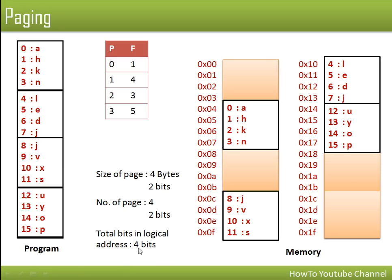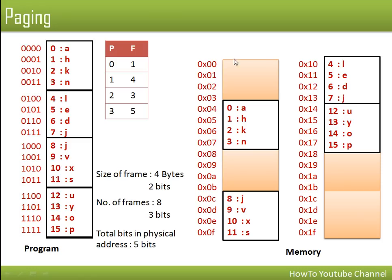Now looking at the frames: we have eight frames total. To represent eight frames, we need n bits such that 2 to the power n equals 8, so n equals 3. Three bits are sufficient to represent 8 frames. Every frame has four bytes, for which 2 bits are sufficient. So our physical address has 5 bits in total: 3 bits for the frame number and 2 bits for the offset.